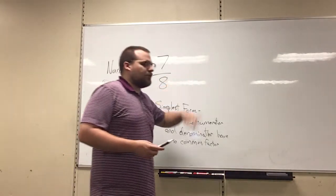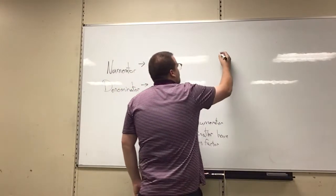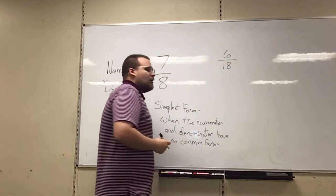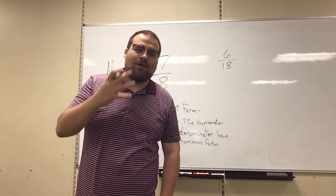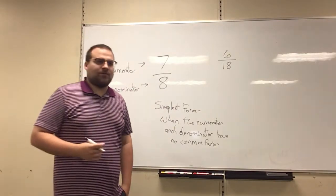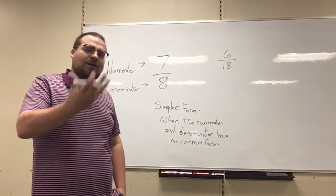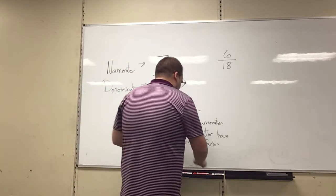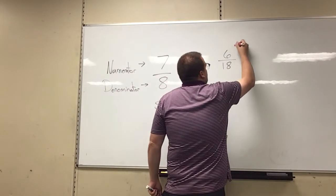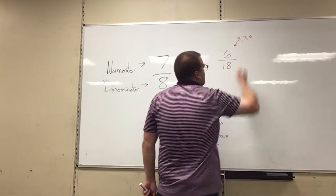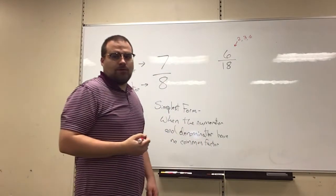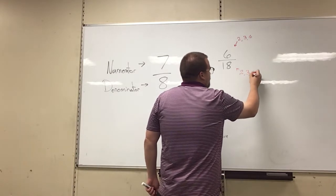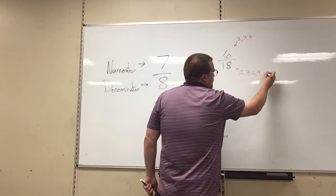So like I was saying a minute ago, I'm going to put a not-simplest form one on the board. Let's say we have 6 over 18. You want to take a look at that fraction and think, what factors do they both have? And of course we're not talking about a factor of 1, we're talking about non-1 factors. So 6 has factors of 2, 3, and 6, right? 18 has factors of 2, 3, 6, 9, and 18.